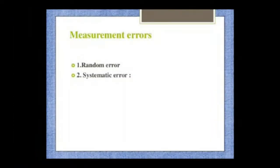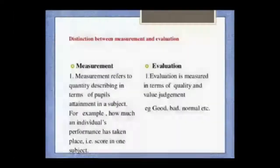What are the errors we can see in measurement? 1. Random error, 2. Systematic error.